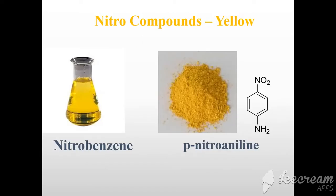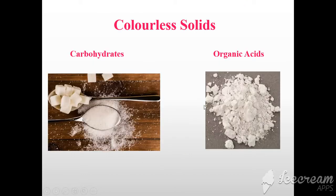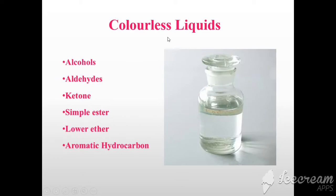After observation of the nature of the compound, we can observe the color. Most nitrobenzene and para-nitroaniline are yellow in color. Colorless solids are carbohydrates and organic acids. Colorless liquids are alcohols, aldehydes, ketones, simple esters, lower ethers, and aromatic hydrocarbons.